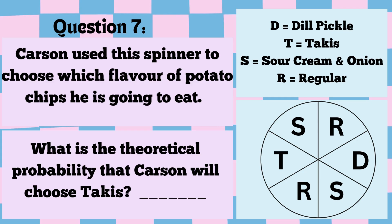The next question: Carson used a spinner to choose which flavor of potato chips he is going to eat. The spinner has six equal sections — two labeled S for sour cream and onion, two labeled R for regular, one labeled T for talkies, and one labeled D for dill pickle. What is the theoretical probability that Carson will choose talkies? Pause the video and calculate the probability.